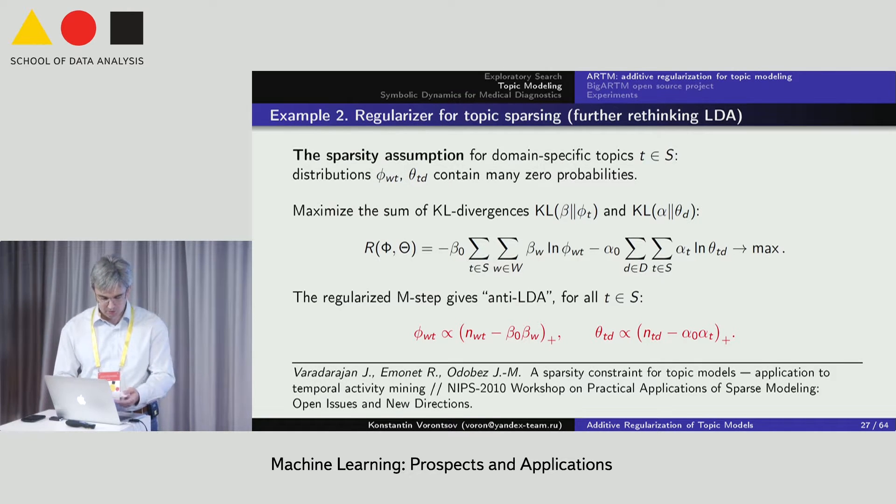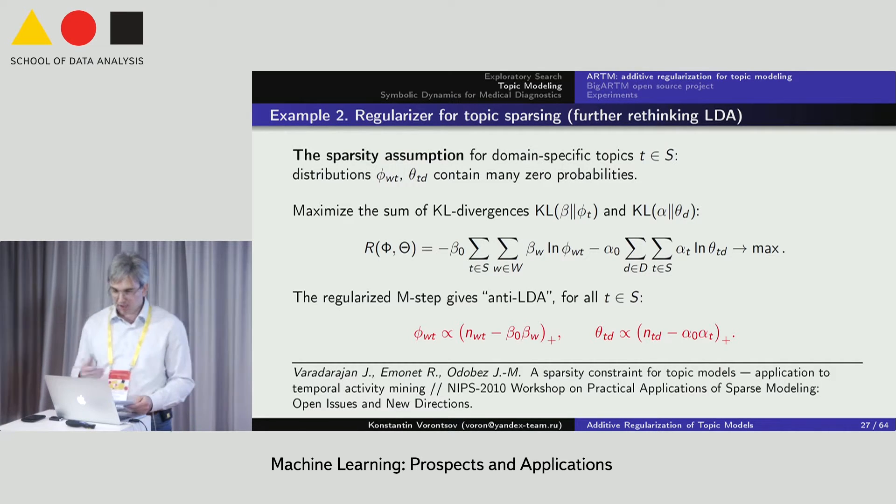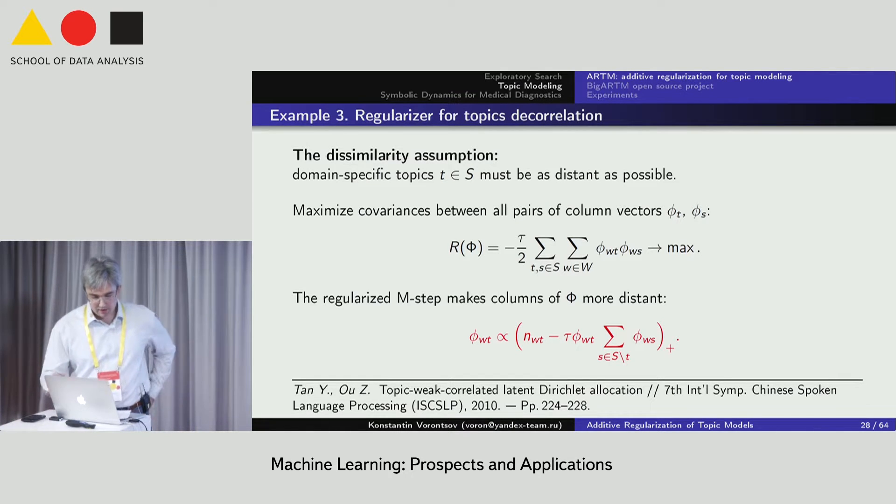To sparse the domain-specific topics, we, contrary, maximize the same Kullback divergences. The result is turning signs from plus to minus here and here. Despite the simplicity, we don't know what Bayesian prior would give such result. So minus is prohibited for the Dirichlet distribution. This is a very simple generalization possible only in our semi-probabilistic approach.